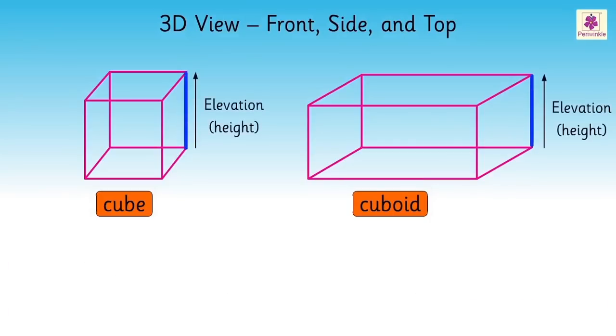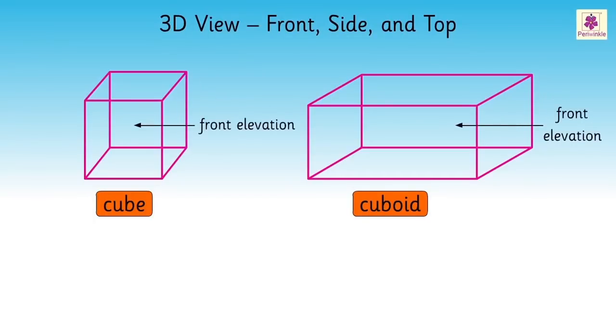The height of the 3D shape shows its elevation. Here, these are the front elevations of the cube and cuboid. And these are the side elevations of the cube and cuboid.